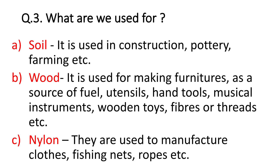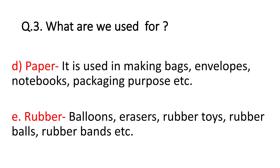Nylon is used to manufacture clothes, fishing nets, ropes, etc. Paper is used in making bags, envelopes, notebooks and for packaging purposes. Rubber is used in balloons, erasers, rubber toys, rubber balls and rubber bands. Even the tires of vehicles are also made up of rubber.